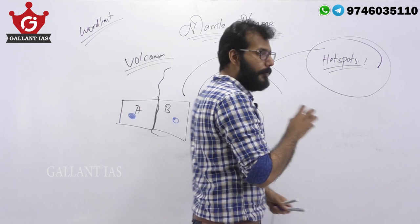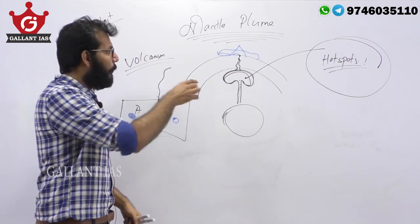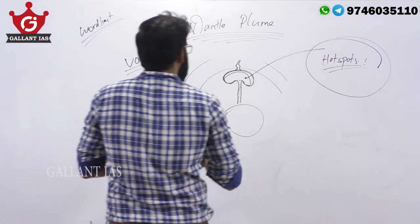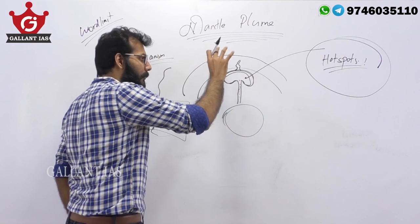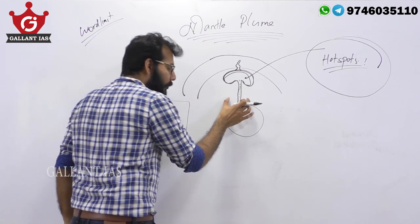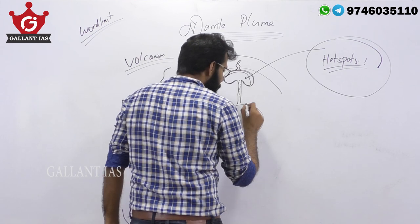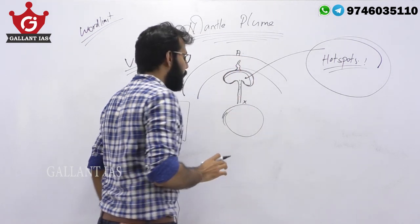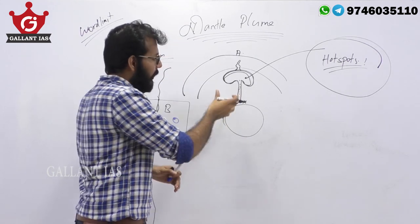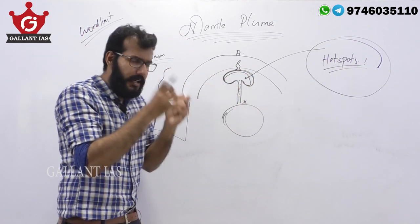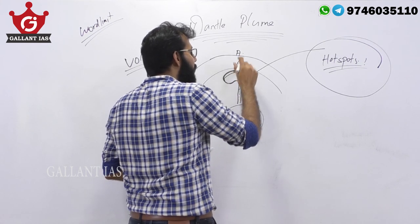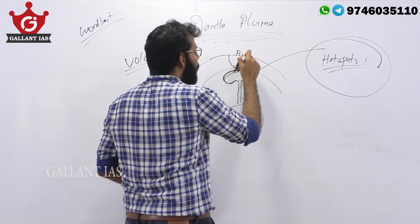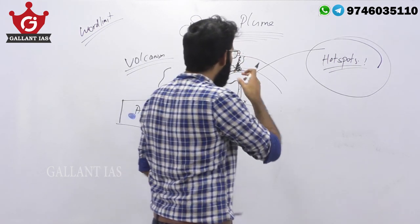These mantle plumes are more or less stationary as compared to our lithosphere. This position in the mantle is not changing. Let's call this position X, and the surface point right above it A. The mantle plume is rising, there is a rounded head of superheated mantle rocks, and this interaction with the crustal region heats up the crustal rock, which slowly starts rising and finds a weak spot and emerges at a spot we call A.